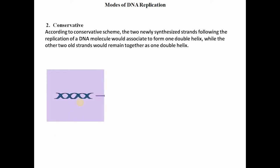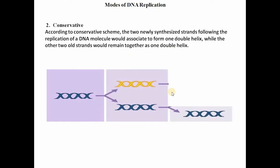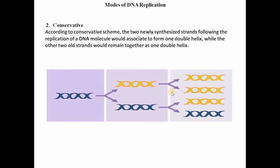The second theory is conservative theory. According to this, the original DNA (shown in blue) makes a complete copy of itself, keeping the original intact. In the first generation, 50% is old DNA and 50% is new DNA. In the second generation, 25% is old DNA and 75% is new DNA.